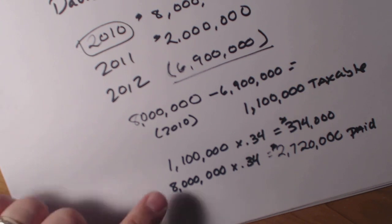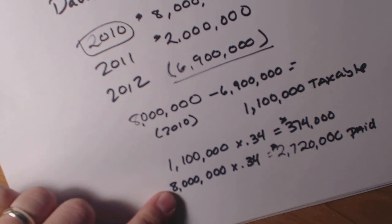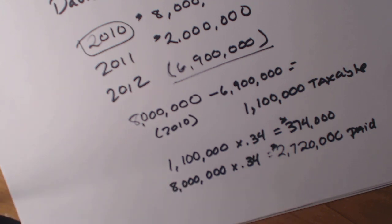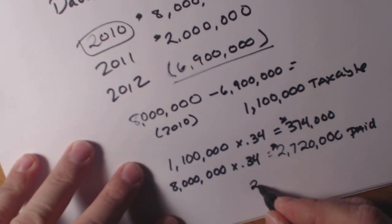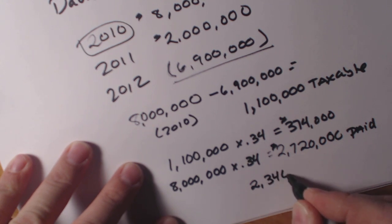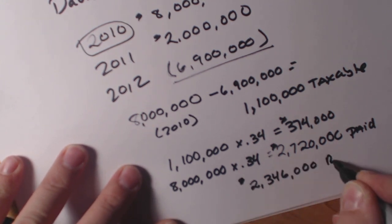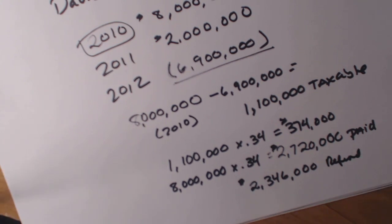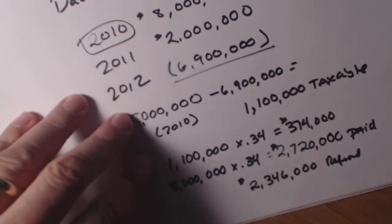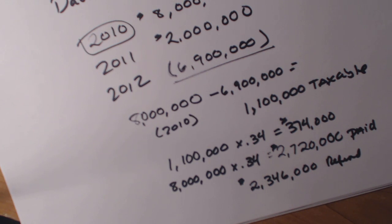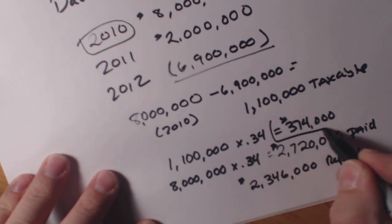So they will get back from the federal government in taxes a refund of $2,346,000. If they took a loss of that magnitude, this refund will help them get themselves back on their feet in order to keep the business alive. This is how you solve the problem, and you will have a problem in your homework — I believe it's number 28 — that looks similar to this.